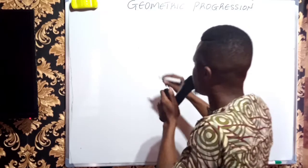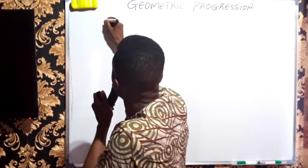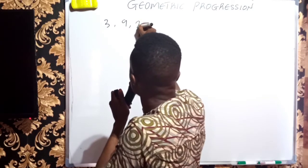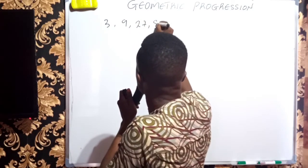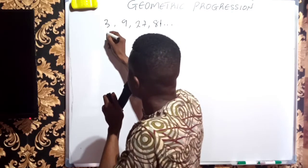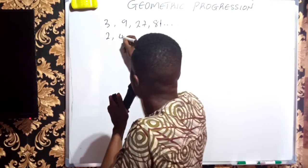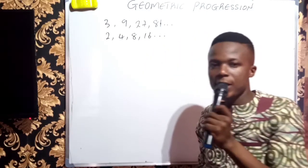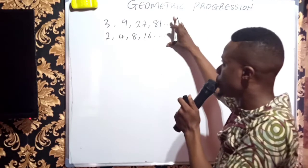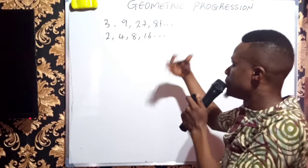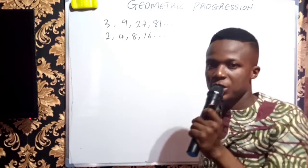For instance, if you have terms like 3, 9, 27, 81, etc. You still have terms like 2, 4, 8, 16, etc. You will find out that these groups of numbers, or these sequences, are increasing by the multiplication of a constant number.